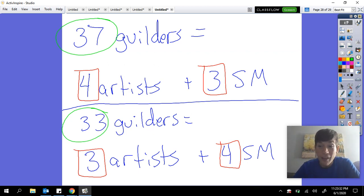Because when I had more stonemasons, the amount of money was less. When I had more artists, the amount of money was more. Now here's the other thing we can figure out: just by looking at these two costs, 37 and 33, the difference is four.